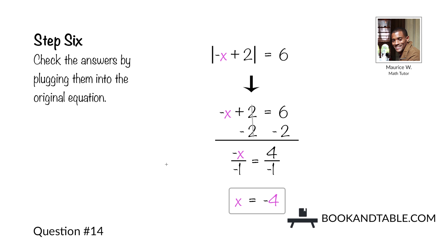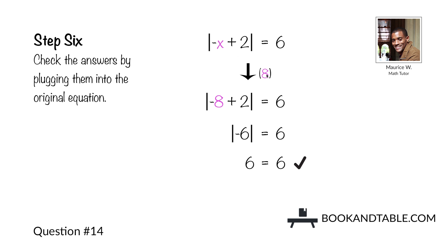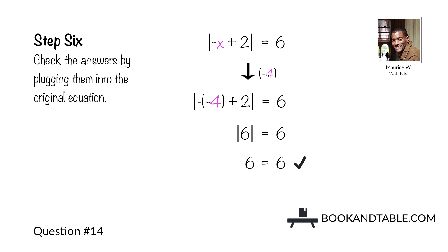Now check both answers by plugging them into the original equation: the absolute value of negative x plus 2 is equal to 6. For x equals 8: negative 8 plus 2 is negative 6, and the absolute value of negative 6 is 6 — so x equals 8 is correct. For x equals negative 4: negative 1 times negative 4 is positive 4, plus 2 is positive 6, and the absolute value of 6 is 6 — so x equals negative 4 is also an answer.